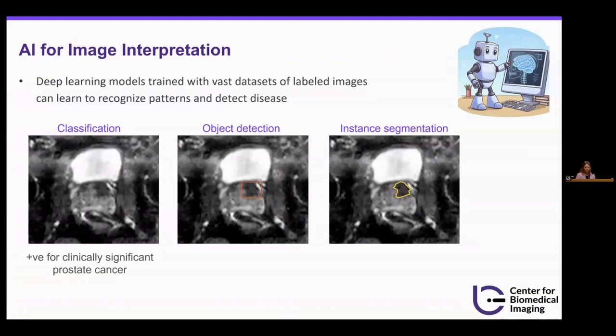Very broadly, we train deep learning models with vast data sets of labeled images. This is supervised learning, and these models can then learn to recognize patterns in the images and ultimately detect disease. We're typically concerned with three types of learning tasks: classification, object detection, and instance segmentation.